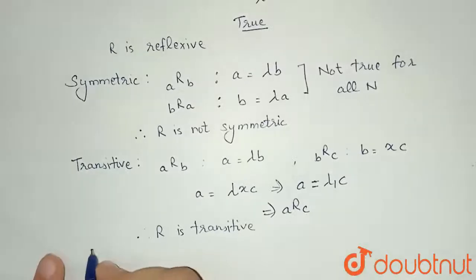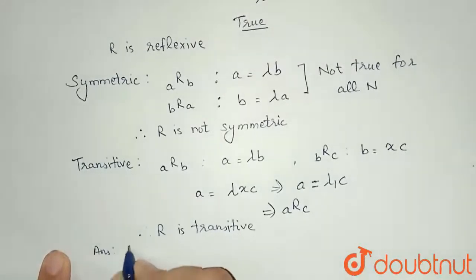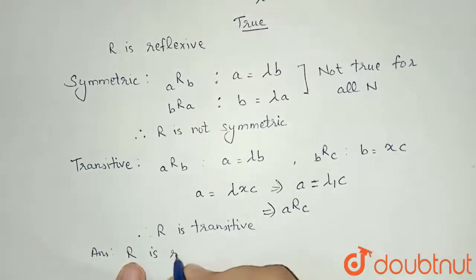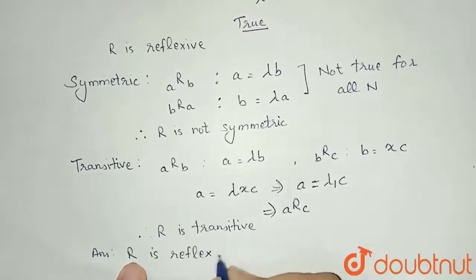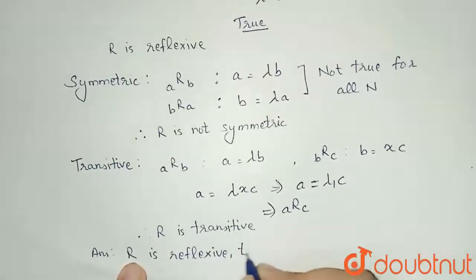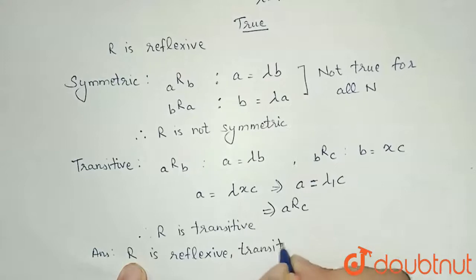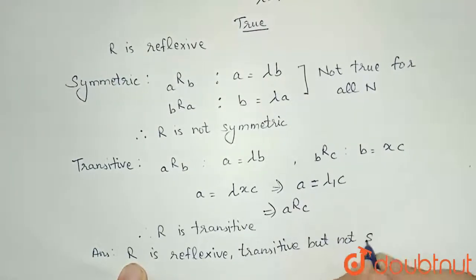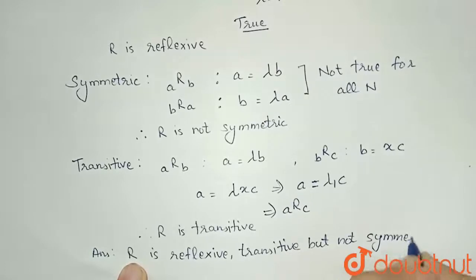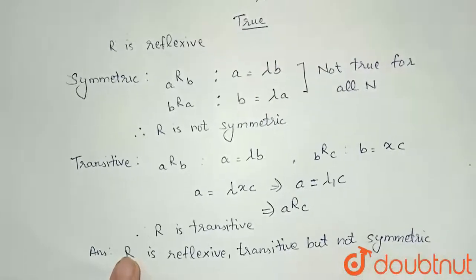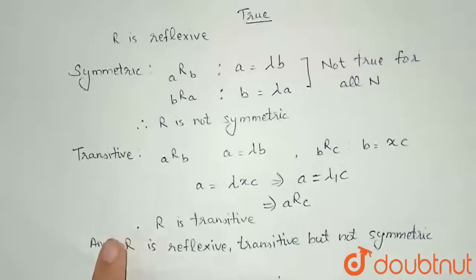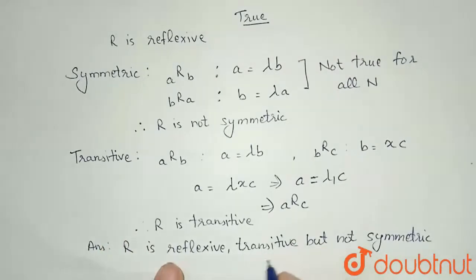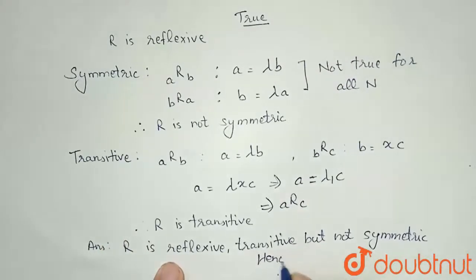And so what we have got finally in my answer: my relation R is reflexive, it is transitive also we have proved, but not symmetric. And in the question we were asked to prove this only, that my relation will be reflexive, transitive but not symmetric. So we have proved this. Hence proved.